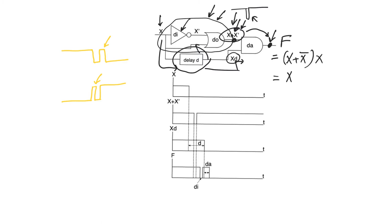The node X + X̄ is going to have a static 1 hazard: we know X + X̄ must equal 1, but because of the differential delay between DI and DO, this node observes a static 1 hazard. The node XD is going to follow the same transition as X, but with some combinational delay. If that delay doesn't exist, the dynamic hazard will not appear. But if it exists and is longer than the delay in the upper path, then we are at risk of having a dynamic hazard.